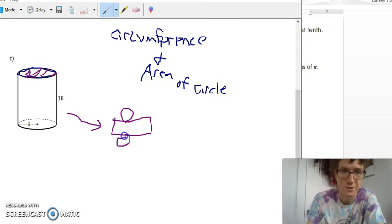Picture how you take a can, you pop open the top, pop open the bottom, and unravel it. You'll get something like this: we have two circles and we have this rectangle. So we already found the area of this circle here.